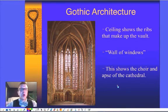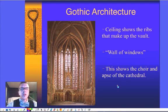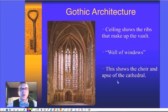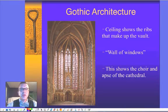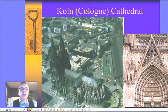This is the choir and apse, the very top end of what would be the head of the cross. If you look at that cross shape of a basilica type church, this is where the cathedral would be, where the choir would be, towards the front door, the head of the church. This is the cathedral in Cologne, Germany.